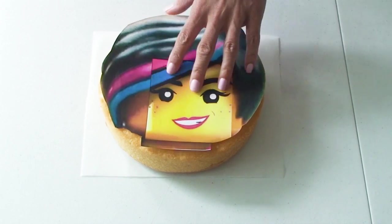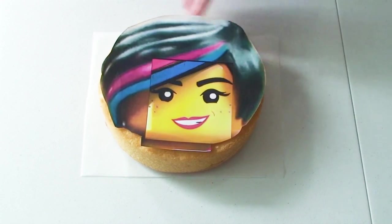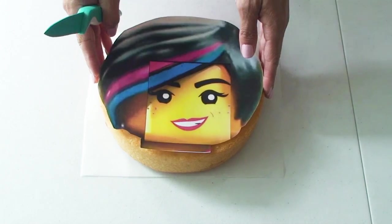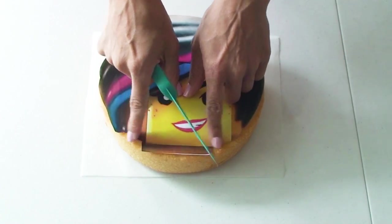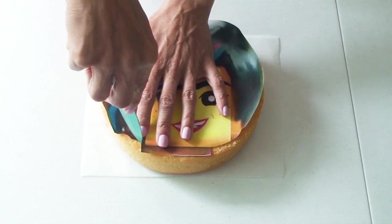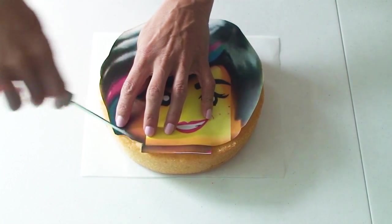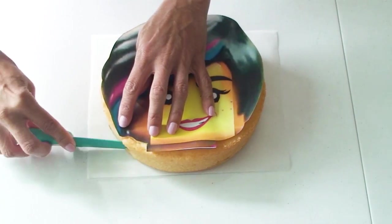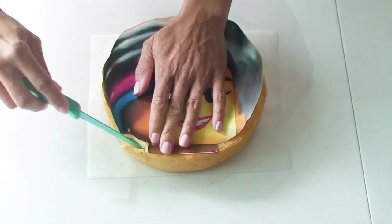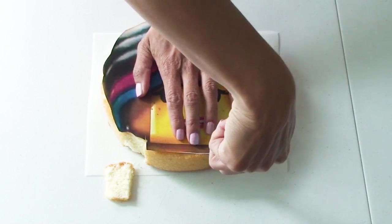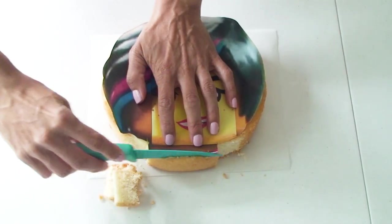The first thing we need to do is take our template, place it on top of the cake, and trim off any areas. Wildstyle's head pretty much covers a full eight inch cake and I just need to trim off the bottom of the neck and to the hairline.